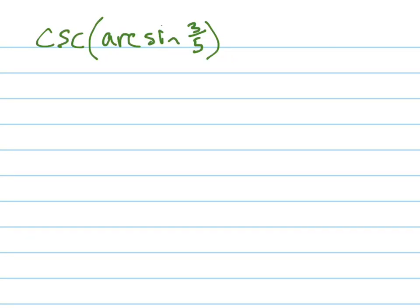Let's find the cosecant of the arc sine of three-fifths. First of all, what this means, let's just go back and think about what this means. This right here is some angle. That's some angle theta. This is the angle that has a sine of three-fifths.